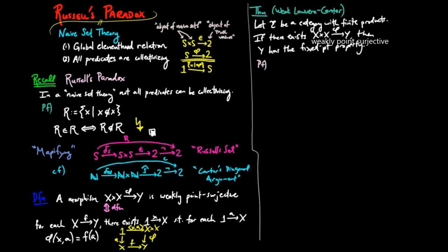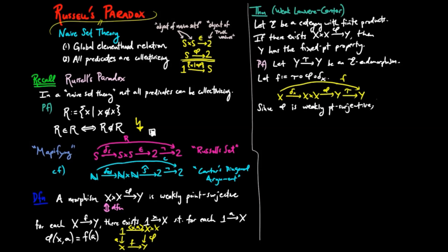For the proof, let tau be an E endomorphism of y. We want to show that tau has a fixed point. So we let f equal the composition tau phi delta sub x, and then since phi is weakly point surjective, there exists a little x in x such that for all little a in x, f of a is equal to phi evaluated on x a.